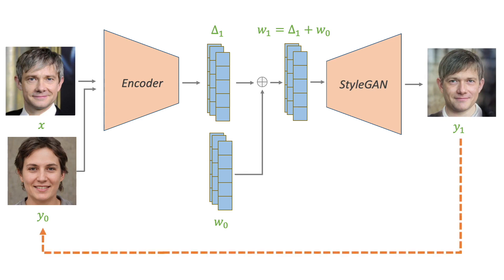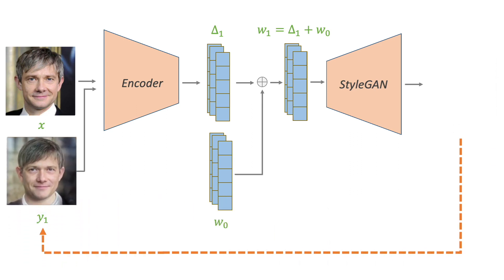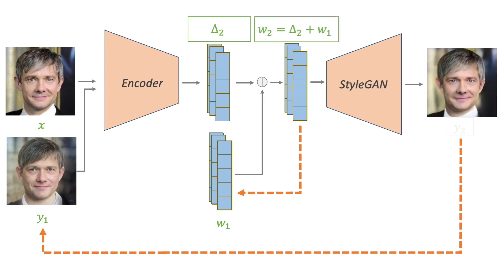This is where the iterative refinement comes into play. We pass the reconstruction Y1 back as input to our encoder in the next iteration, and set our current inversion prediction to W1. The encoder now outputs a new residual delta2 with respect to our previous inversion W1, giving us a new inversion W2 which results in an improved reconstruction. If we repeat this iterative loop a small number of times — say 5 — we'll slowly improve our inversion and the corresponding reconstruction. In a few words, ReStyle can be thought of as learning to optimize, but in a very efficient manner.